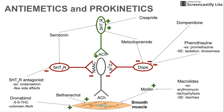Then there's that green neuron on top that is going to promote that acetylcholine neuron. That green one is also triggered by serotonin — this is the 5-HT4 receptor — and it promotes smooth muscle contractions and GI motility.